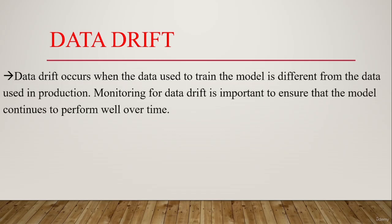Seasonal drift occurs when there are changes in data patterns over different seasons or time periods. Covariate shift occurs when the distribution of input variables changes over time. Outlier shift occurs when the distribution of data is affected by outliers. Data drift can affect the performance of machine learning models as the model is no longer optimized for the new distribution of data. To address data drift, it is important to monitor the performance of the model over time, regularly re-evaluate the model's accuracy on new data, and use strategies such as retraining on updated data or using statistical techniques to detect changes in the data distribution.